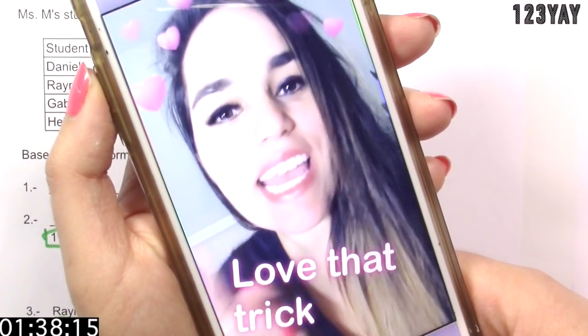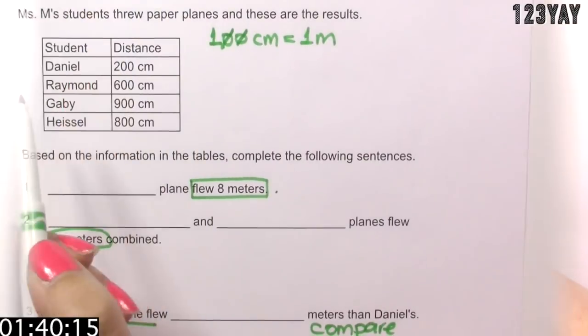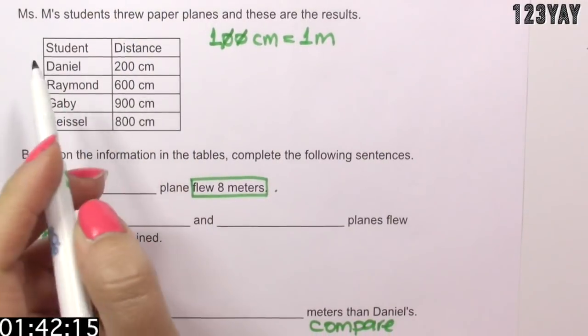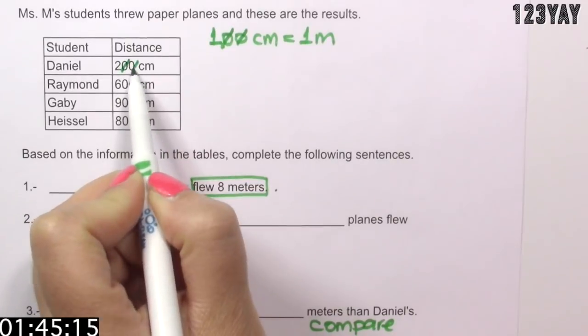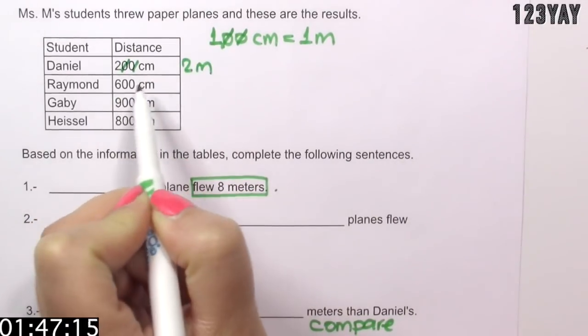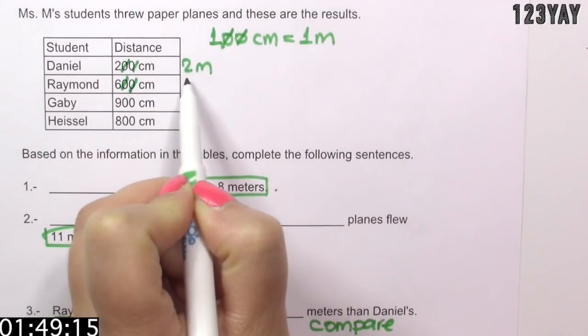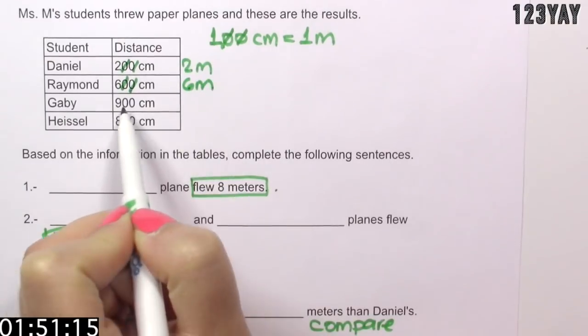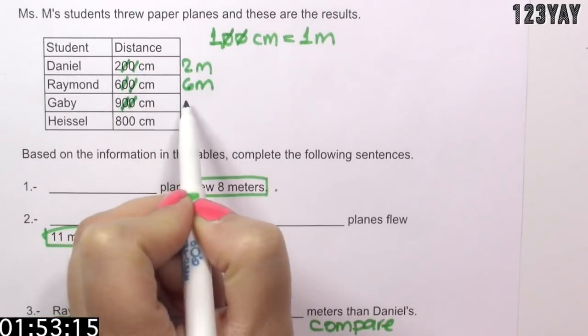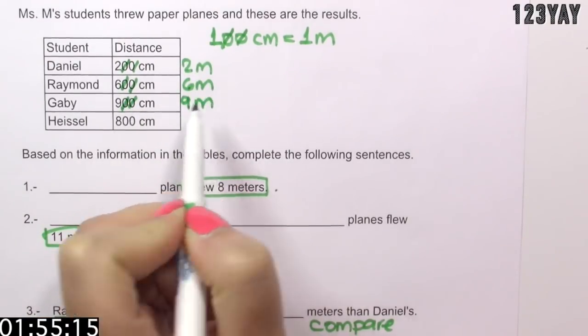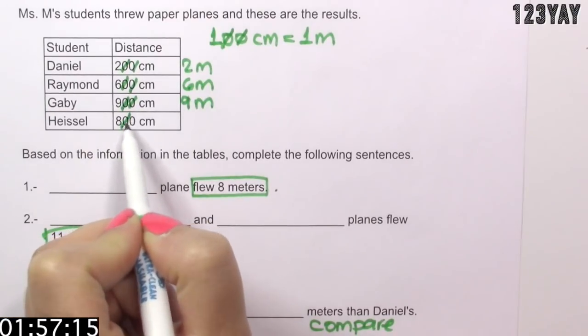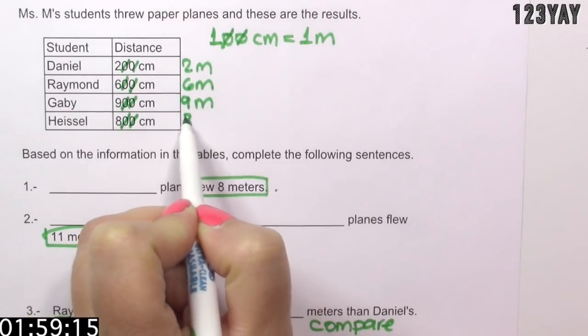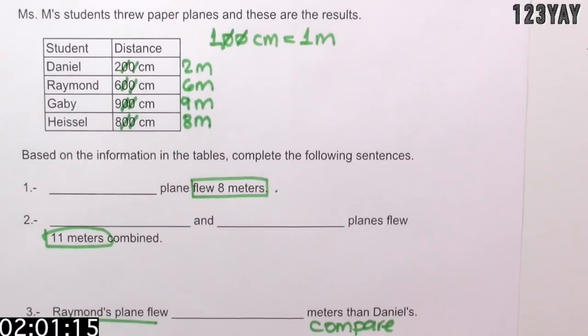Wasn't that easy? I hope you love that trick. Let's convert all these into meters. 200 centimeters equals to 2 meters. 600 centimeters equals to 6 meters. 900 centimeters is the same as 9 meters. And 800 centimeters is the same as 8 meters.